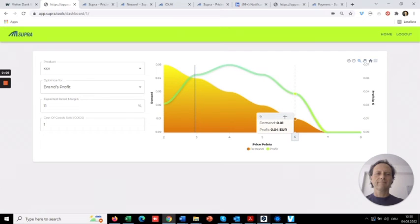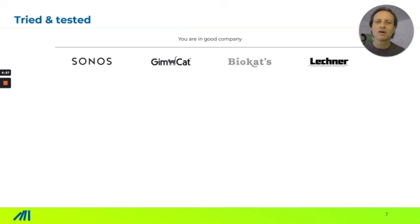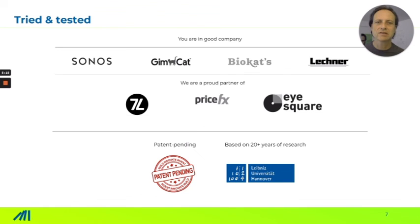Everything within Supra Price Optimizer is tried and tested. Great companies like Sonos and Gimborn have all used it and made big profits from it. We partner with great names like Price-X and I-Square, and everything is based on deep research — over 20 years of research from the University of Hanover — and the methodology is patent pending.